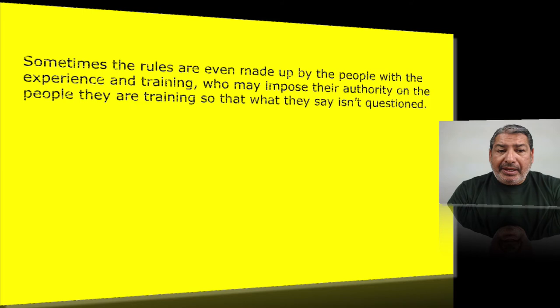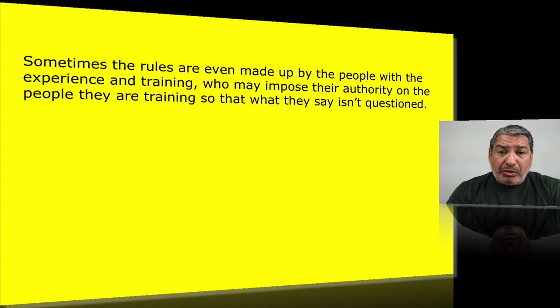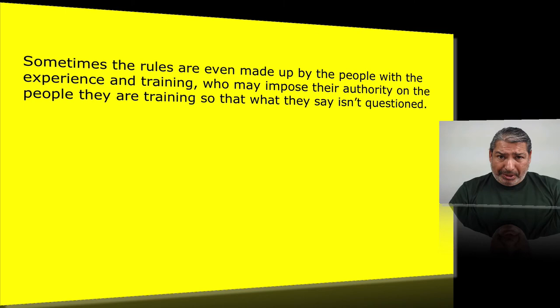Sometimes the rules are made up by people with training experience who impose their authority so that what they say isn't questioned. A lot of trainers have what's called the god complex. If you look at Daniel Kahneman's work on this, he talks about the IKEA bias — 'I made it so it must be right.' And because that person is in a position of influence, they're seen as having the halo effect — we don't challenge them because we believe they must know what they're talking about since they're the ones training us.